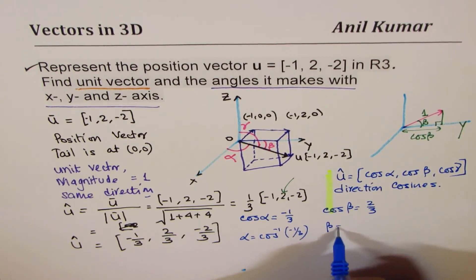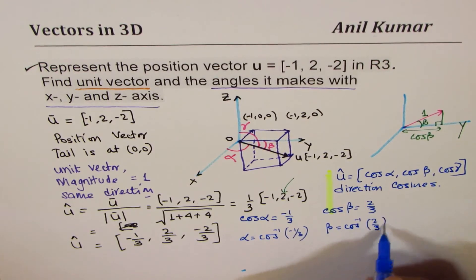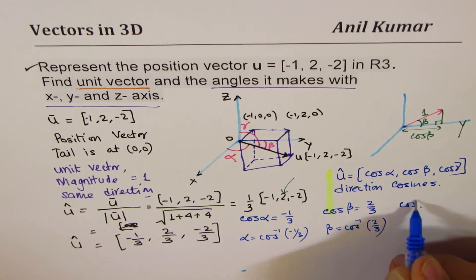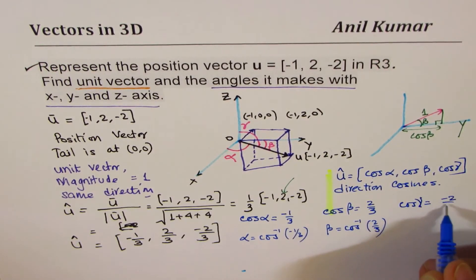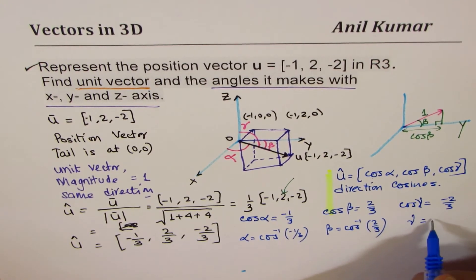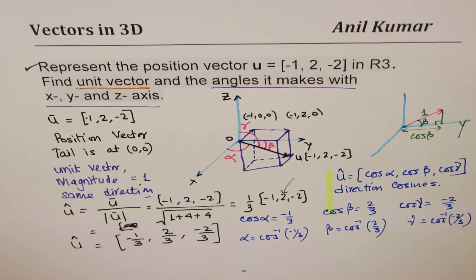Cos β is 2/3. So, β is cos inverse of 2/3, and cos γ is -2/3. So, γ is cos inverse of -2/3. Does it make sense to you? Great.